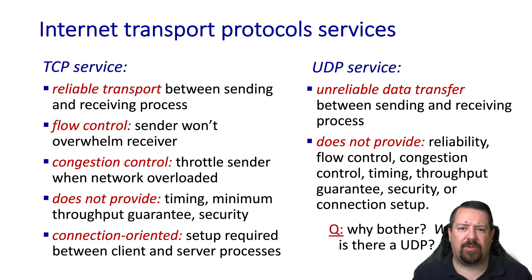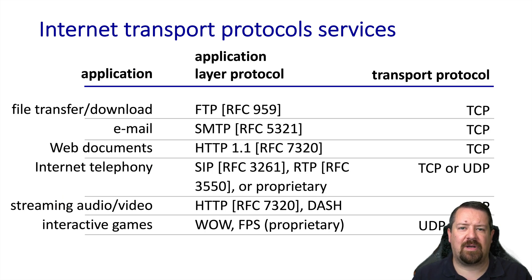Almost all network traffic uses one of two transport protocols: TCP or UDP. TCP offers 100% reliable in-order delivery, flow control, congestion control, and a connection-oriented setup process, but does not offer any latency or bandwidth guarantee. UDP makes essentially no guarantees on top of what the underlying network layer offers. Almost all common applications map onto TCP; the notable exception is DNS, which primarily uses UDP as its default protocol, though it can also operate over TCP.